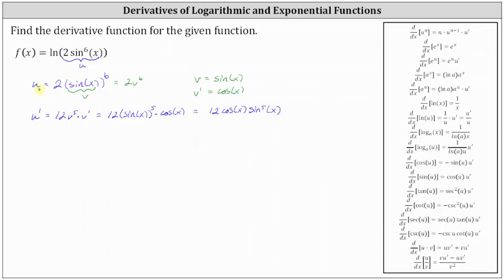Now that we have u and u prime, we can think of the original function f of x as just f of x equals natural log u. And the derivative of natural log u with respect to x is equal to 1 divided by u times u prime.